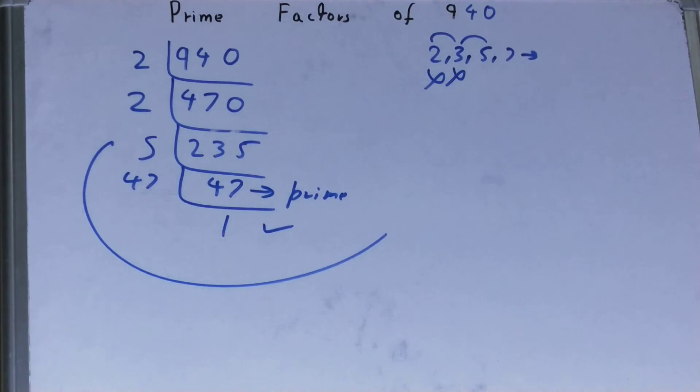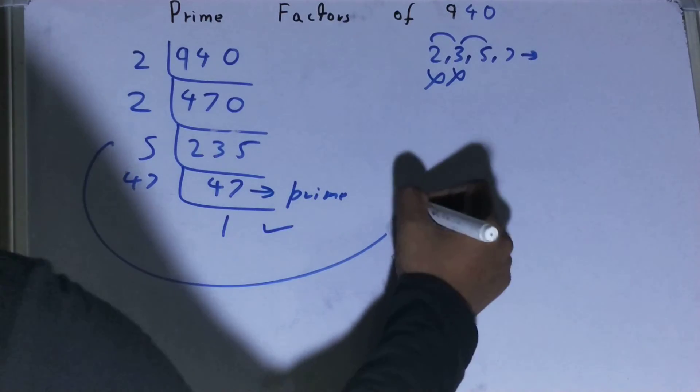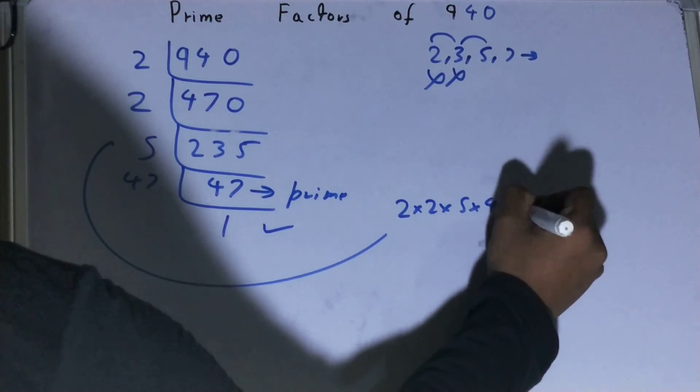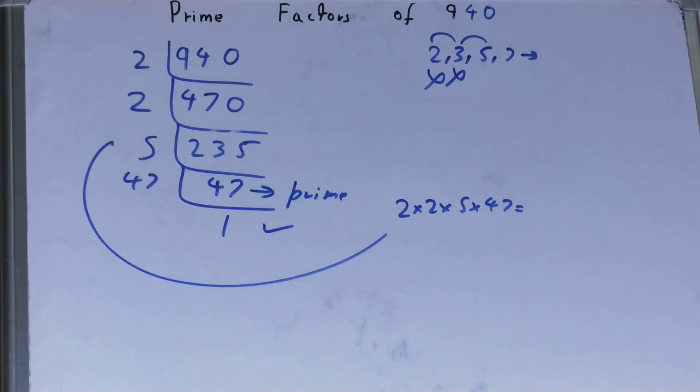Whatever you have on the left side will be the set of prime factors for the number 940, that is 2 times 2 times 5 times 47. Now if you want to check whether it is right or not, you can multiply it, and if you get the number back again, that means your calculation is correct.